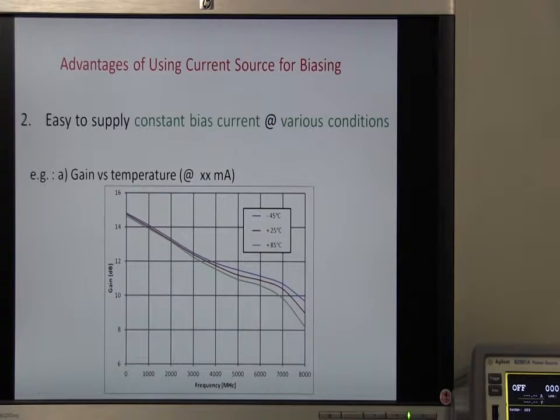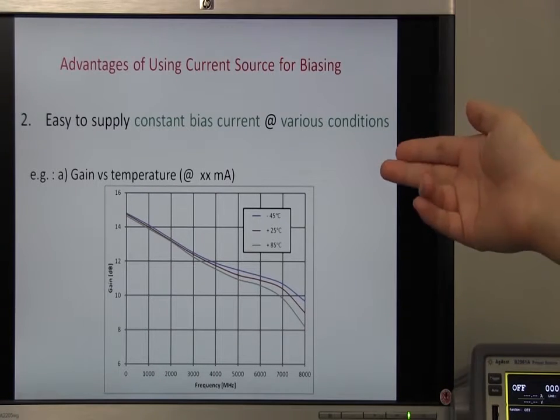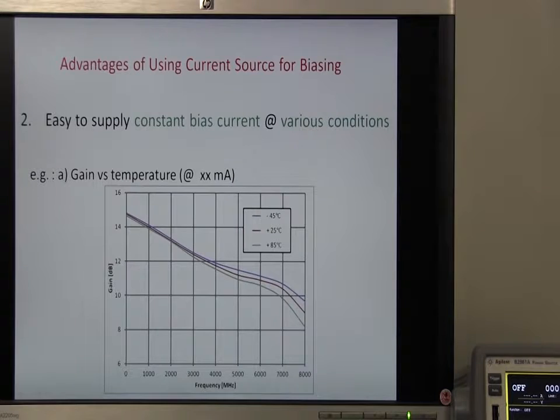Second, you can provide a constant bias current, while for example changing the ambient temperature, and evaluate the performance of the device.